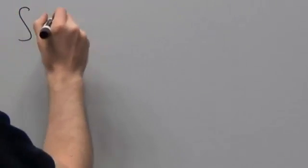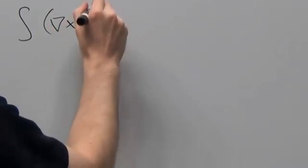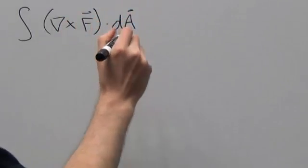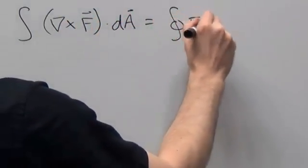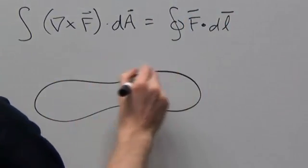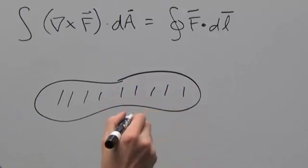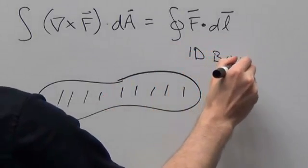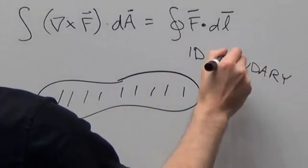Okay, next up we've got Stokes' theorem. That's the tricky one. But you can kind of do it by process of elimination. We have rules involving 1D domains and 3D domains, and rules involving regular derivatives and divergences, so what's left? How about a 2D domain and a curl?